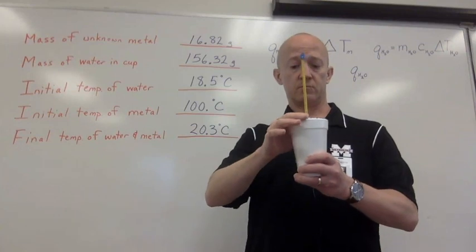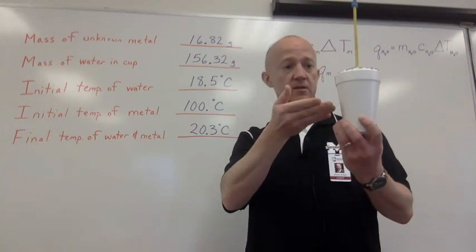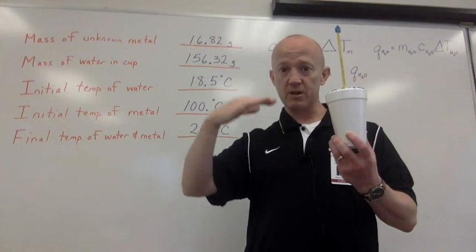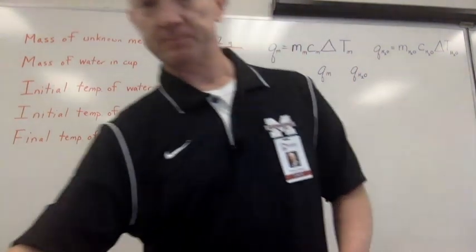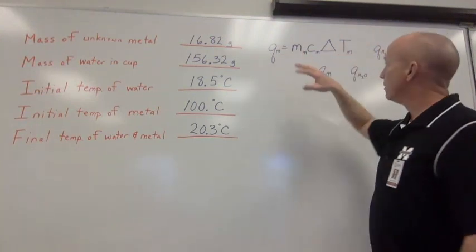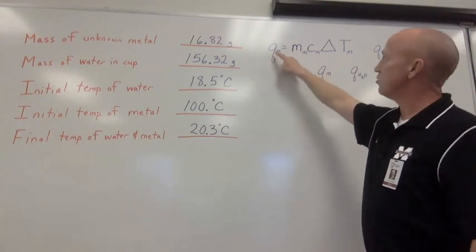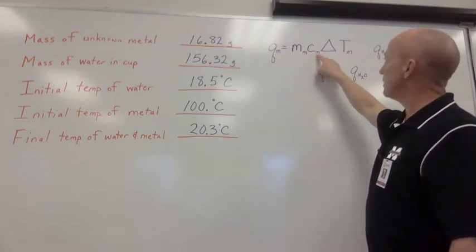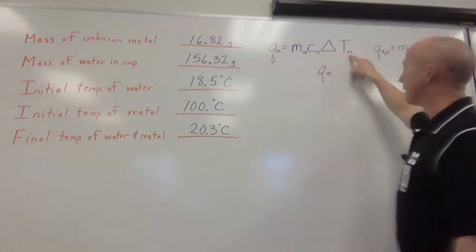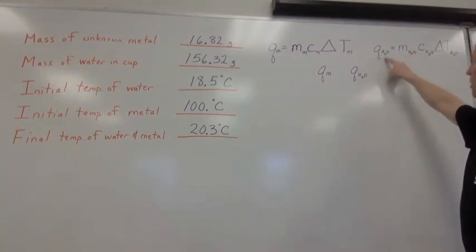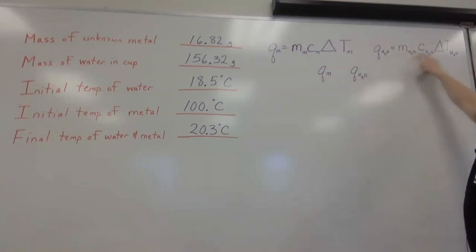And then, after that, the temperature changes, doesn't it? The temperature of the water inside the cup begins to go up. The temperature of the metal inside the cup begins to go down. And the thing about that is, we can use this equation that we used in the last video to determine the heat. In this case, Qm is the heat of the metal. The mass of the metal, the specific heat of the metal, and the change in temperature of the metal. We can also use this equation to describe the heat involved with the water. The heat of the water is equal to the mass of the water times the specific heat of the water times the change in temperature of the water.